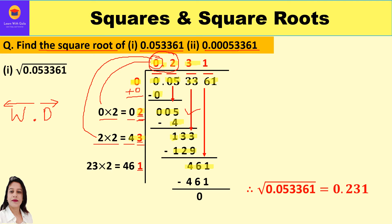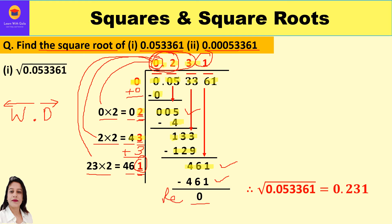Bring down the next period 61, giving a dividend of 461. The current quotient is 023, which is 23; doubling it gives 46. Leaving a blank, we look for a digit such that the product equals or is less than 461. Placing 1: 461 × 1 = 461, which is exactly equal, so the remainder is 0. There are no more periods, confirming this is a perfect square. The square root of 0.053361 is 0.231.